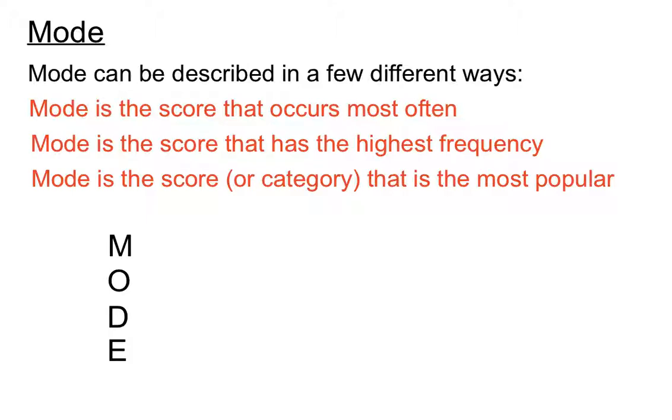We have the word mode that we can write down there and if we concentrate on the first two letters it sort of tells us what the mode is. Mode is the score that occurs most often. So that's one way of remembering what the mode is—most often. Concentrate on those first two letters and you might remember it.